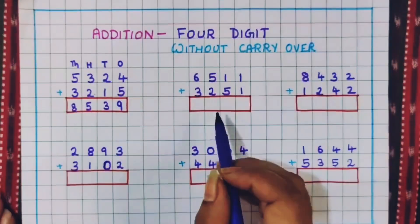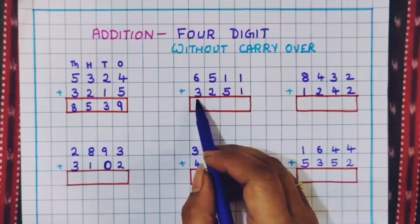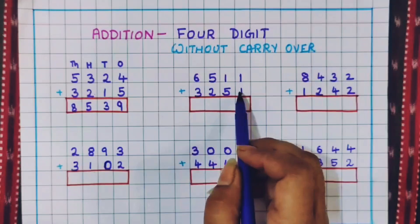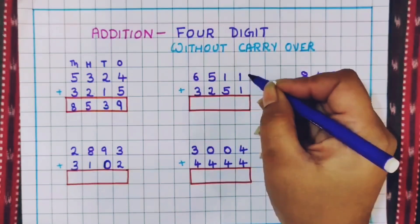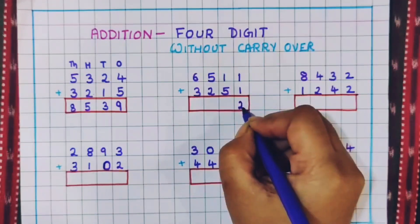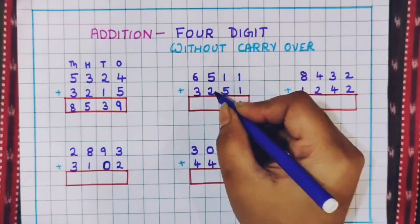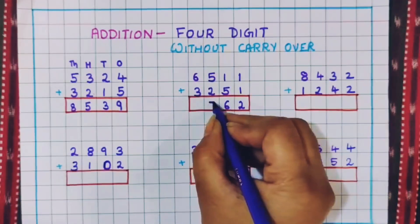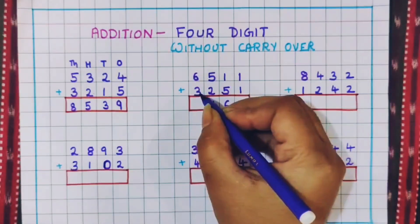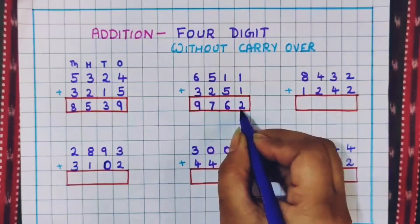Now let's see the next problem. 6511 plus 3,251. So first we will do the additions of the ones place. 1 plus 1 is 2. 1 plus 5 is 6. 5 plus 2, 7 and 6 plus 3 is 9. So the answer is 9,762.